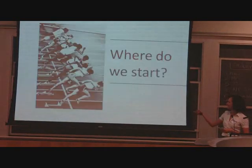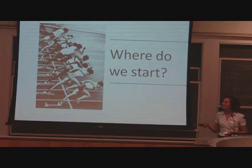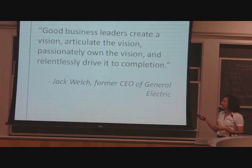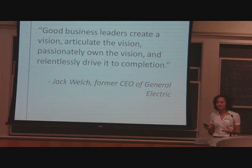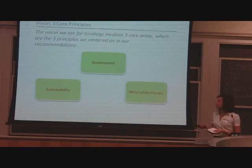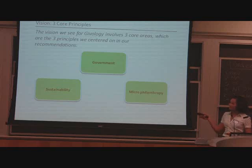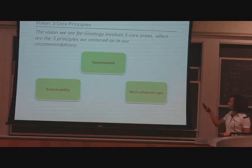So where do we start? We start by looking at the end. We start by creating a vision. As the former CEO of General Electric said, we need to create a vision and develop steps to achieve this vision. Through researching and learning about Giveology, we decided upon three principles to create our vision. Micro-philanthropy and sustainability are the current goals of Giveology, and our long-term goal is to include government involvement.